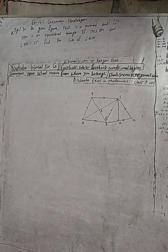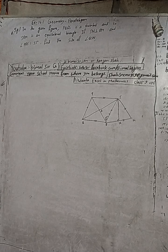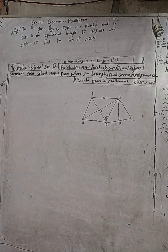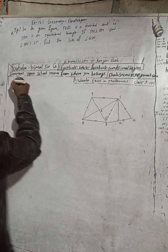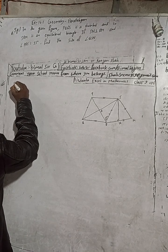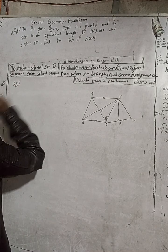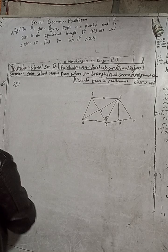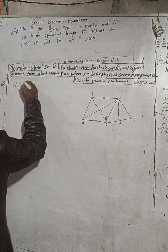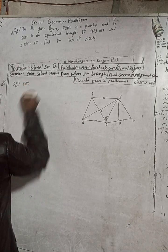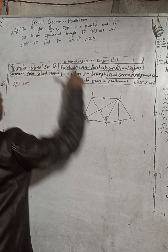Hi class 9 and 10 students, welcome back to Bimal Sir's YouTube channel. This is question number 5G, Exercise 14.1, Geometry — Parallelogram. Excel in mathematics class 9. Don't forget to check the playlist, you will get a lot of solutions. If you don't find the solution, comment me here. The question is here in the given figure.